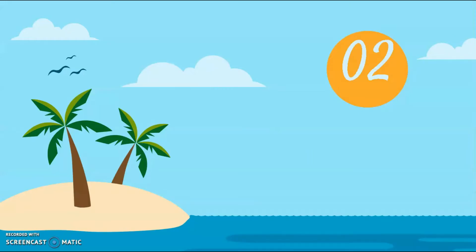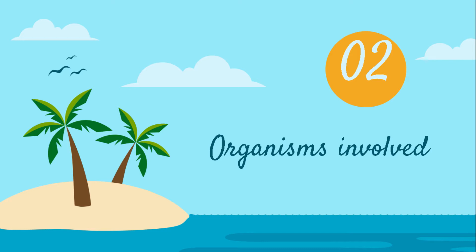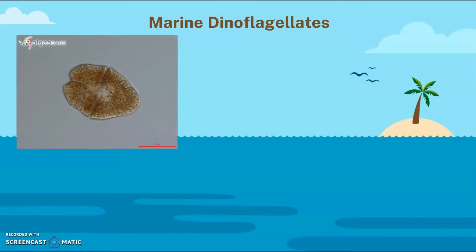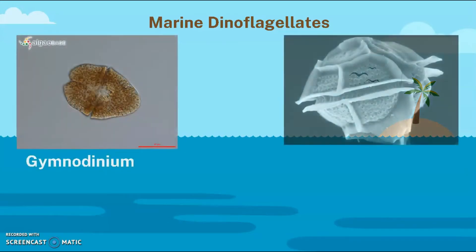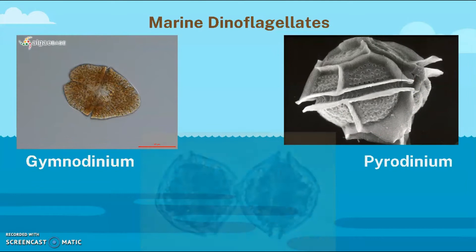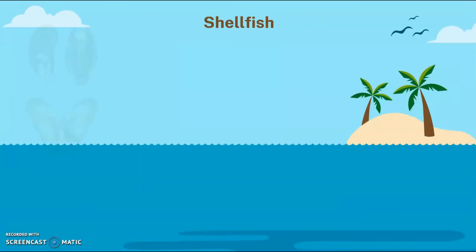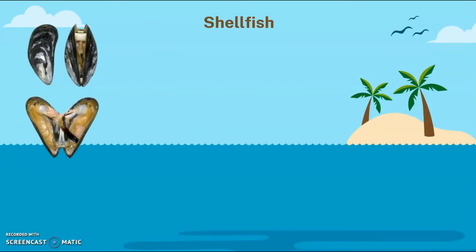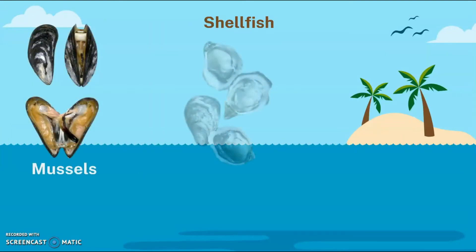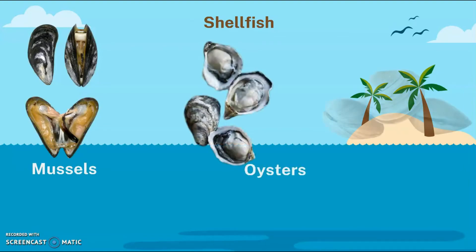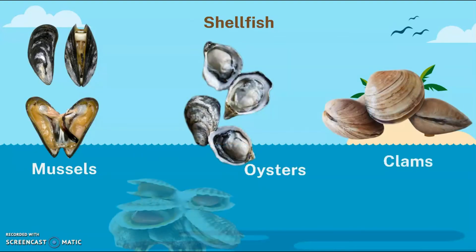Moving on to the organisms involved in Paralytic Shellfish Poisoning. Red tides are usually caused by three known marine dinoflagellate genera, which are Gymnodinium, Pyrodinium, and Alexandrium. They will then be filtered by shellfish such as mussels, oysters, clams, and scallops.